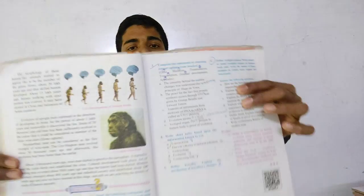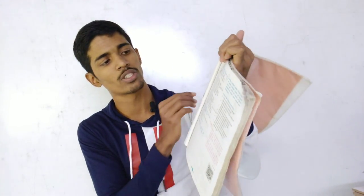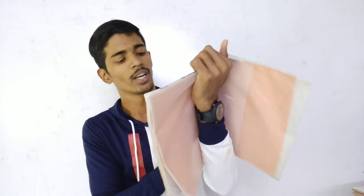Human evolution — there can be a one-mark objective question like 'which man is considered the first example of wise man?' The answer is Neanderthal man. You can definitely get this in board examination. For Chapter 1 overall, the recurring important answers are Darwin's theory, vestigial organs, palaeontological evidence, and Lamarckism. I request you to go through these answers thoroughly and learn them by heart.